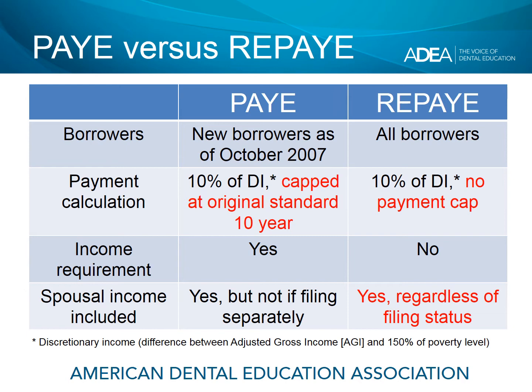Looking at the monthly payment calculation, both PAY and REPAY have payments calculated at 10% of discretionary income, but there's a big difference. With PAY, regardless of how high your salary goes, you are never required to pay more than what you would have paid under the original standard 10-year plan — there's a cap on payments. There is no such cap with REPAY; you will always pay 10% of discretionary income. There is also an income requirement with PAY — you must demonstrate partial financial hardship based on your debt, income, and family size. There is no such income requirement with REPAY, and that's why there is no payment cap.